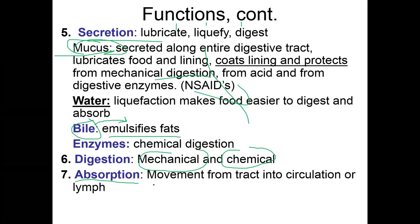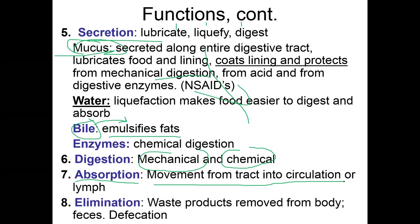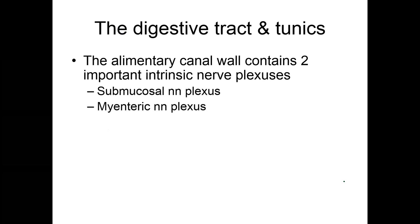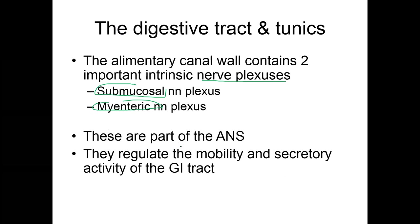Absorption is the movement of macronutrients and micronutrients from the GI tract into circulation so the body can use them for growth and repair. Then there's elimination — the body expels byproducts. The alimentary canal wall contains two important intrinsic nerve plexuses: the submucosal nerve plexus and the myenteric nerve plexus, which are part of the autonomic nervous system.